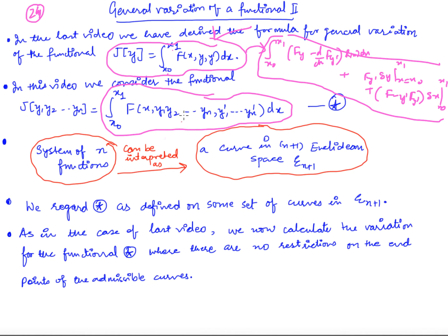Now we would like to know what is the general variation formula for the functional of this type. Here, if you want to find the Euler's equation, the necessary condition is that you have to put the general variation equal to 0. We know that this is the general variation and if y is an extremal with respect to all curves where there are no constraints on the endpoints, then of course y is an extremal with respect to all those curves where there are restrictions at the endpoints.